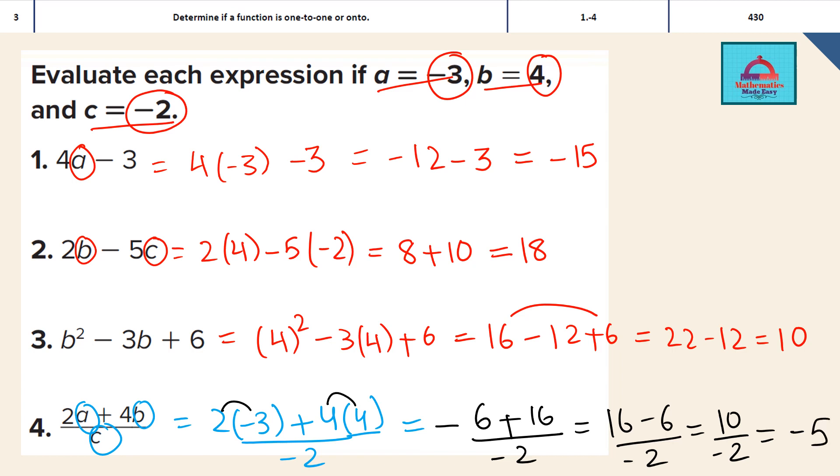For question number 1, the final answer is minus 15. For question 2, the final answer is 18. For question 3, the final answer is 10. And for question 4, the final answer is minus 5.